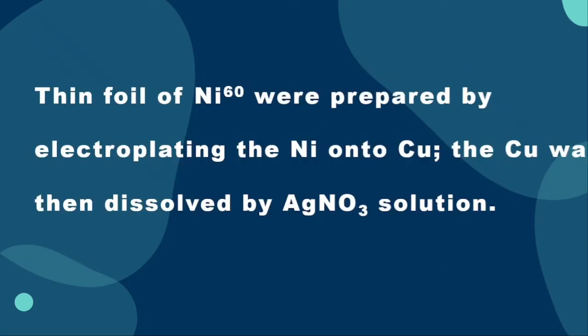In the case of the nickel experiment, thin foils of enriched nickel-60 were prepared by electroplating the nickel onto copper. The copper was then dissolved by AgNO3 solution. The abundance of nickel-60 in the enriched sample was more than 85 percent. Nickel-61 would produce the isotopes but only at high energies, high excitation energies. In view of this low abundance, its effect in this experiment was very small and therefore it was neglected.